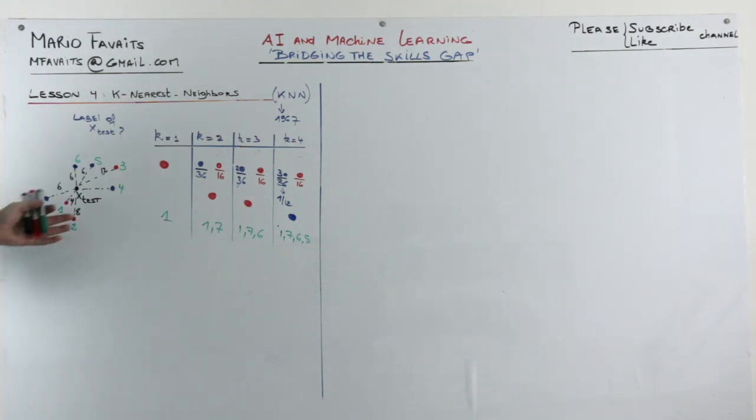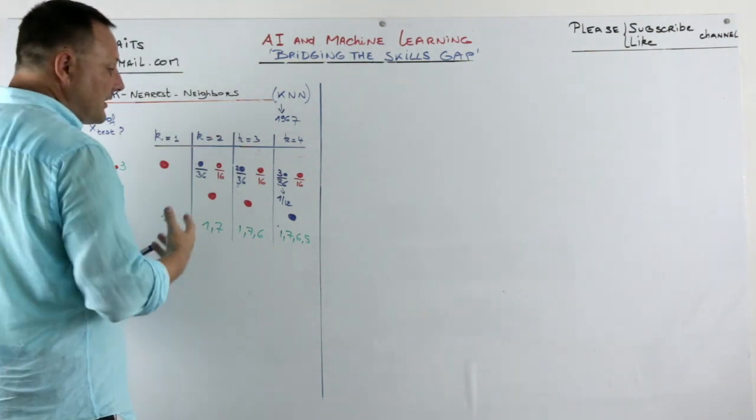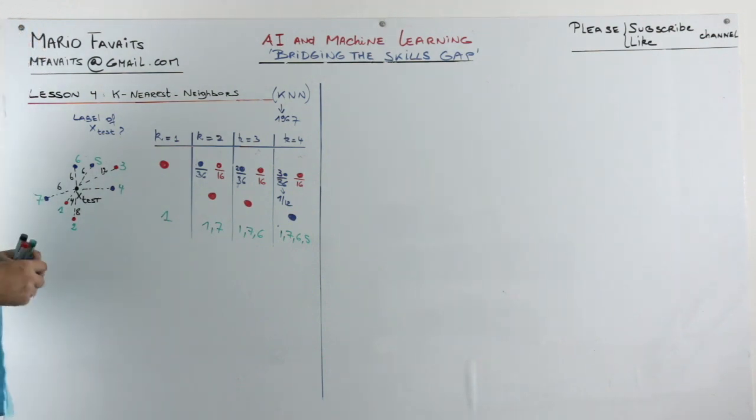So what I wanted to show you is that choosing the right k is important because it has an effect on the outcome of your algorithm.